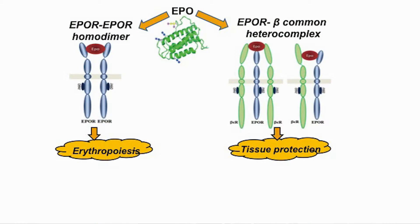Erythropoietin, or EPO, is a glycoprotein which is produced in the kidney and is responsible for red blood cell production, a process known as erythropoiesis. It also has a tissue protective effect due to its expression in several cell types, such as vascular smooth muscles and endothelial cells.